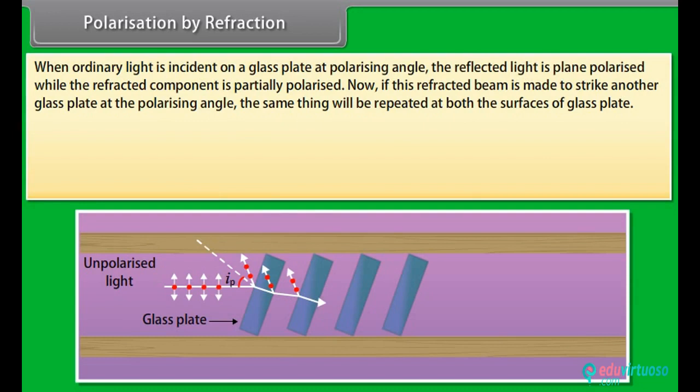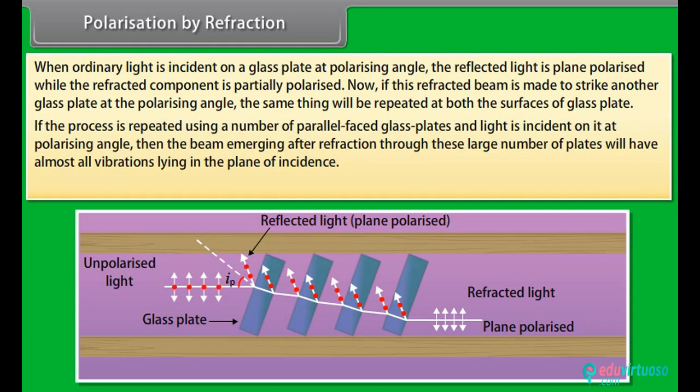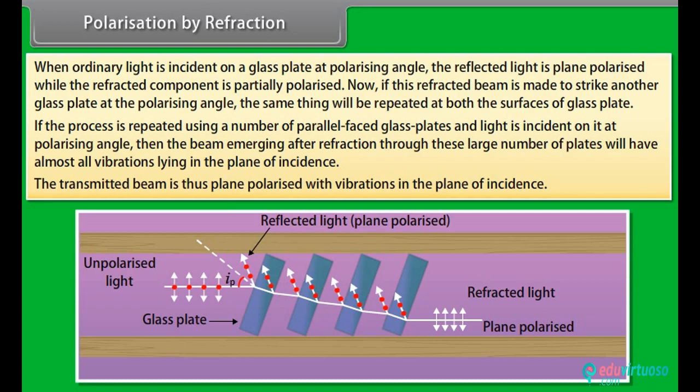Polarization by refraction: when ordinary light is incident on a glass plate at the polarizing angle, the reflected light is plane polarized while the refracted component is partially polarized. If this refracted beam strikes another glass plate at the polarizing angle, the same thing is repeated. If the process is repeated using a number of parallel glass plates with light incident at the polarizing angle, the beam emerging after refraction will have almost all vibrations lying in the plane of incidence, making the transmitted beam plane polarized.